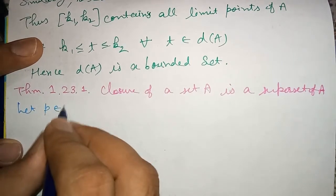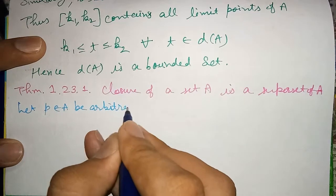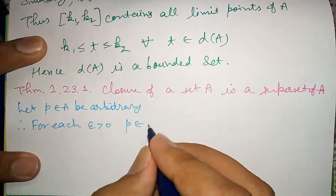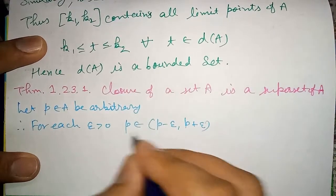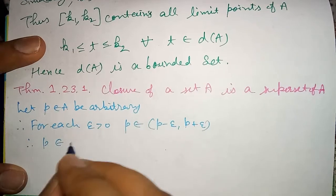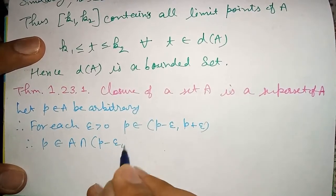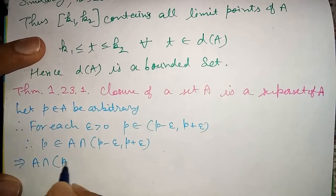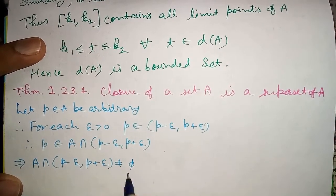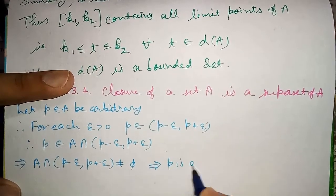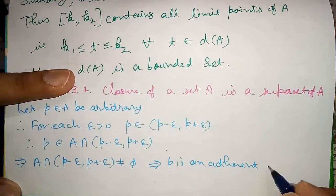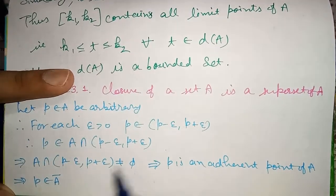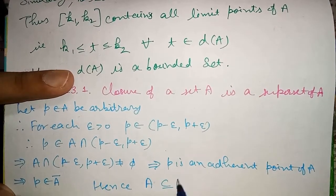Now we prove that A is a subset of A-bar. Let P belong to A be arbitrary. For each epsilon greater than zero, P belongs to the interval (P − ε, P + ε). Therefore, P belongs to A, so the intersection of A with (P − ε, P + ε) is not equal to the empty set. This implies P is an adherent point of A, so A is a subset of A-bar.